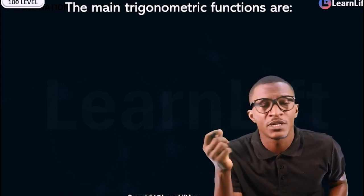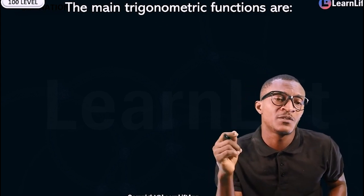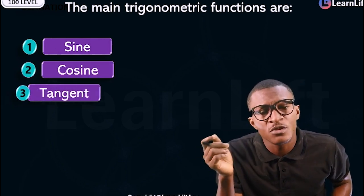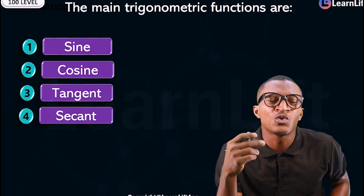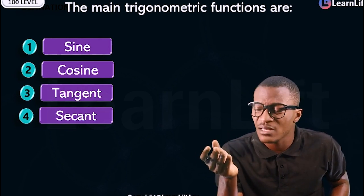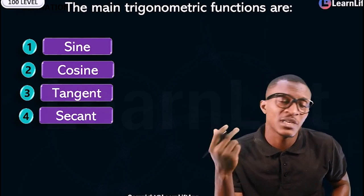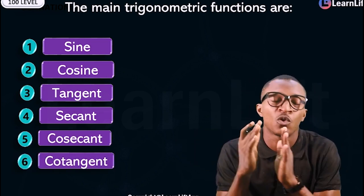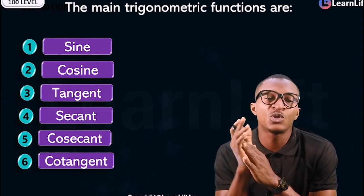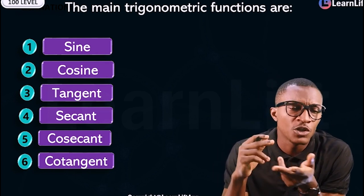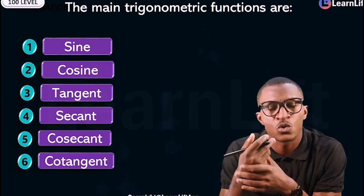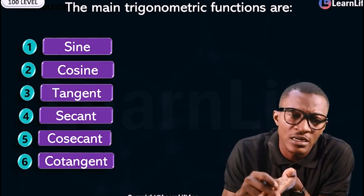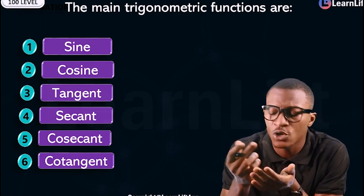There are six basic trigonometric functions. Number one, you have sine. Number two, we have cosine. Number three, we have tangent. Number four, we have secant. Number five, we have cosecant. And number six, we have cotangent. So the six trigonometric functions are: sine, cosine, tangent, secant, cosecant, and cotangent.